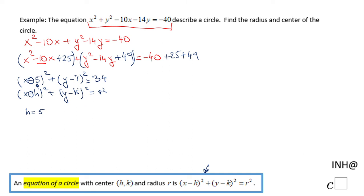K is 7, and then that gives us the center, which is (5, 7). And then we have one more thing to find, the r.